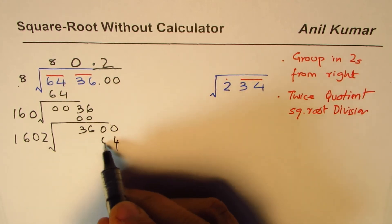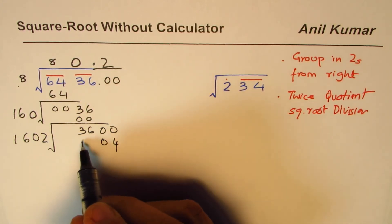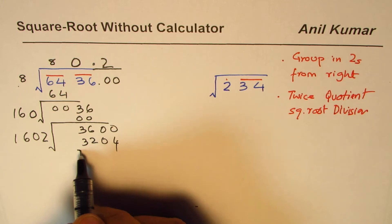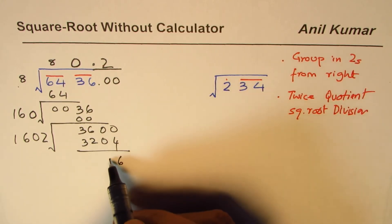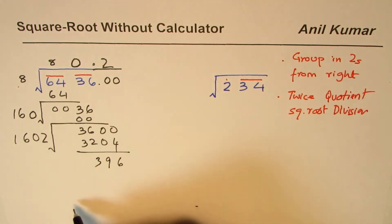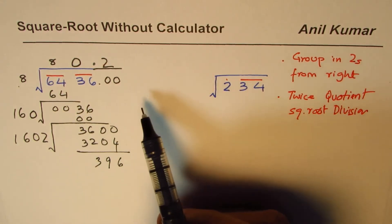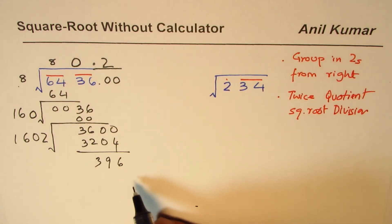2 times 2 is 4, 2 times 0 is 0, 2 times 16 is 32. So we do get some remainder which is 693. You can continue with this process by placing two more zeros and so on.